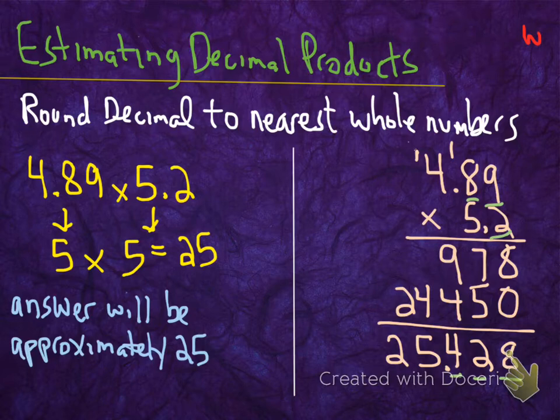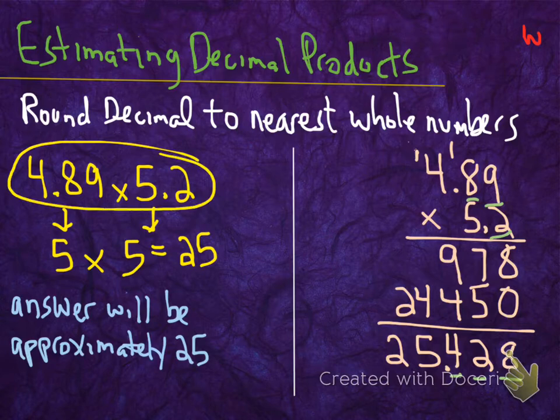Okay, another way to estimate decimal products. Make sure we keep writing these down in our notes. Pause when you need to. What we're going to do is round each decimal number to the nearest whole number. So here we have our example: 4.89 times 5.2. That's a lot of digits to multiply if I use the standard algorithm. But if I estimate the product, I can see if I'm close. And then when I actually do the math, I can have a better idea if I'm right or wrong. 4.89 rounded to the nearest whole number is 5, we round up. 5.2, well that's not 5.5 or greater, so we have to round down to 5. So we round both those decimal numbers to 5. One rounds up, one rounds down. And we know 5 times 5 is 25.